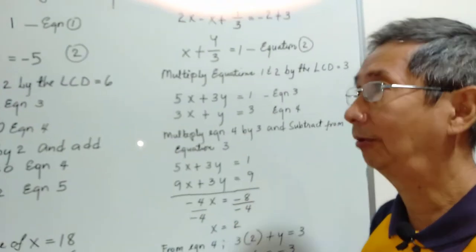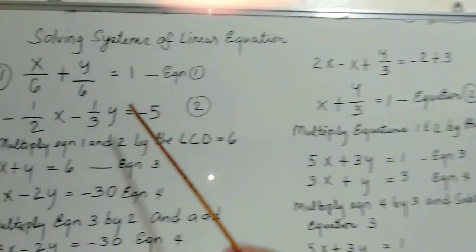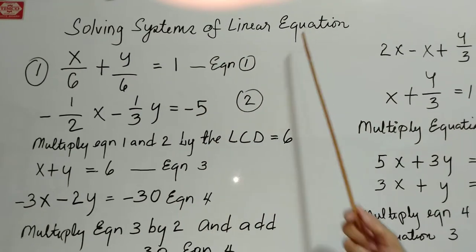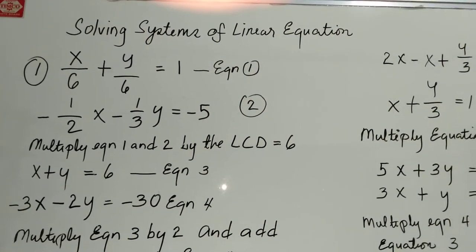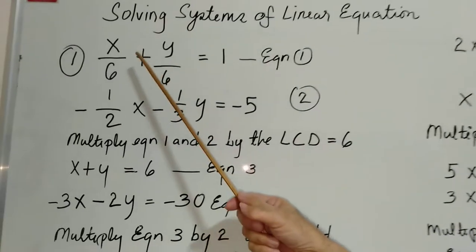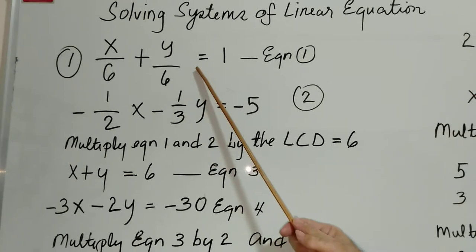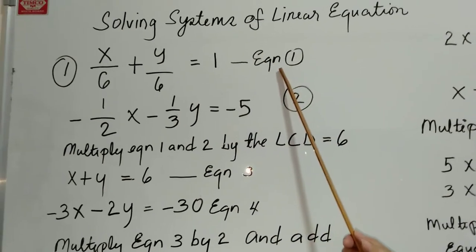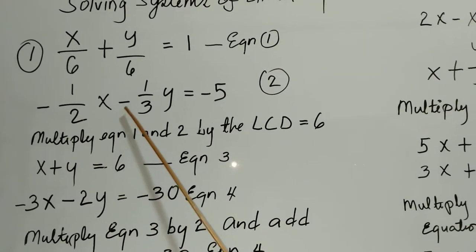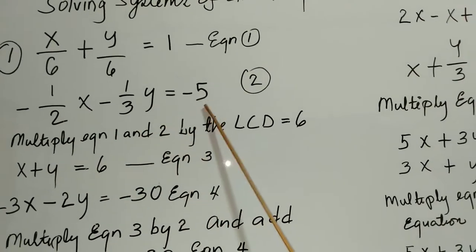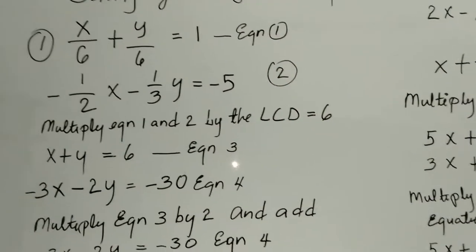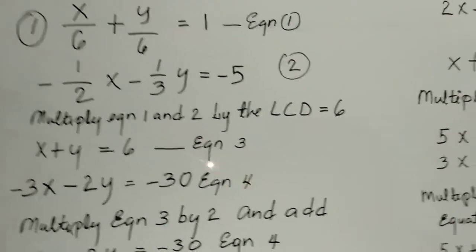Good morning. Today we're going to have a detailed discussion on solving systems of linear equations. We have two problems. For the first one, we have x over 6 plus y over 6 equals 1 — we call this equation 1 — and negative one-half x minus one-third y equals negative 5 — this is equation 2.